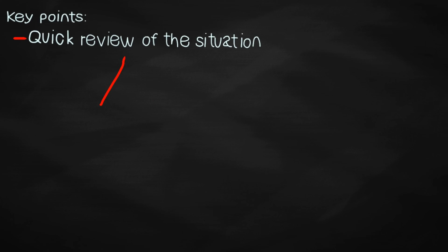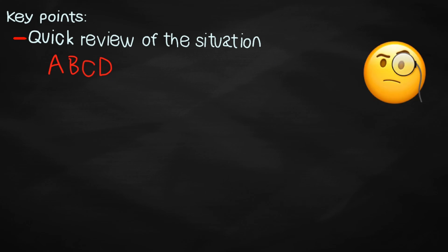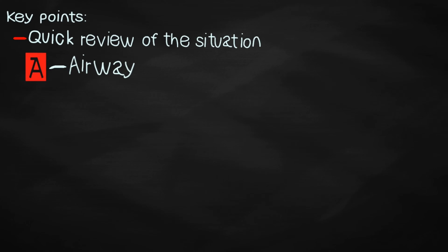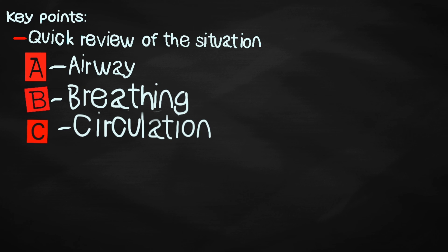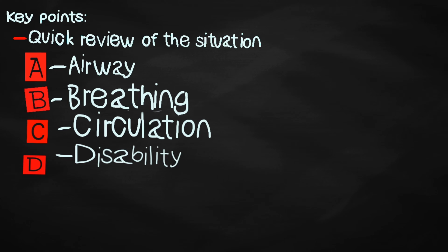The first key point is a quick review of the situation. Here, you will assess the patient's A, B, C, D using observation technique. A is for airway, B is breathing — observe how your patient breathes. C is circulation — check body temperature, blood pressure, and heart rate output. D is disability — check for any signs of deterioration or need for immediate intervention by assessing level of consciousness. This quick review should take only two to five minutes, done as briefly as possible.